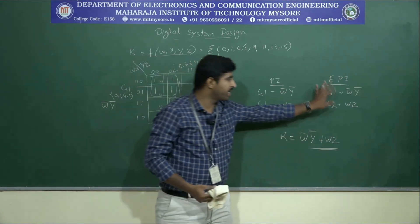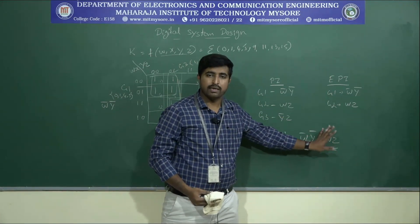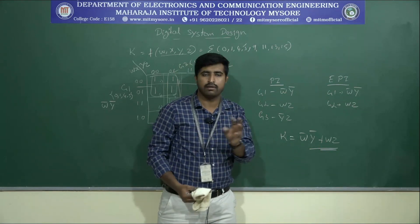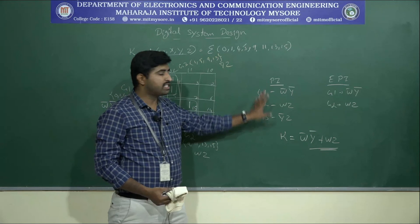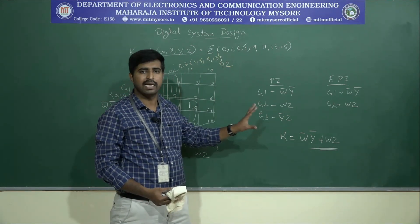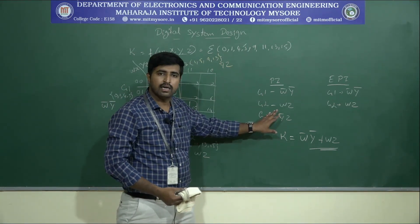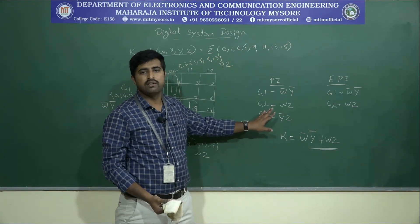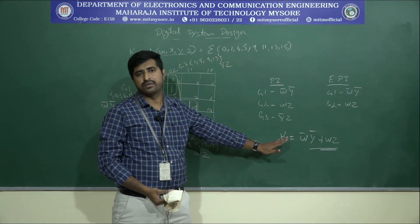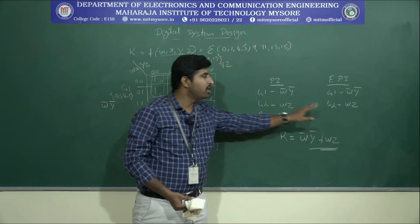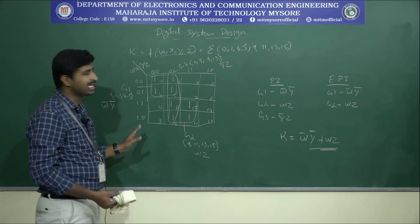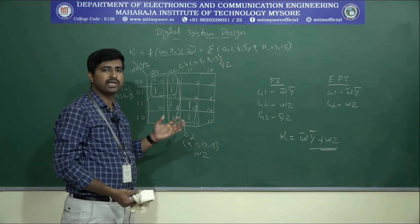Groups g1 and g2 together cover all logic ones: {0,1,4,5} and {9,11,13,15}. Group g3 is a prime implicant but it is redundant — cells 1,5 are in g1 and cells 9,13 are in g2 — so g3 does not appear in the simplified equation. The simplified equation is: k = w̄ȳ + wz. Keep in mind: only the essential prime implicants that cover all logic ones form the final simplified equation.